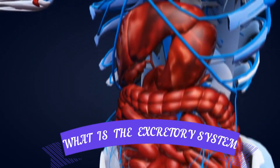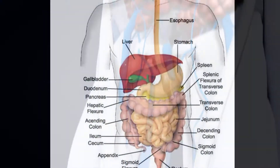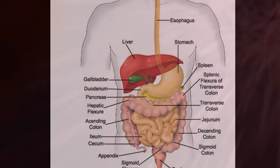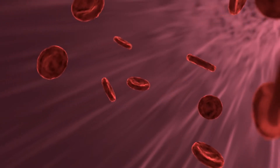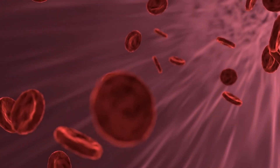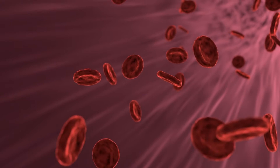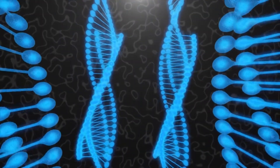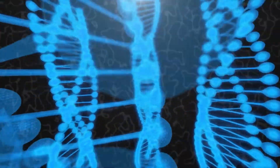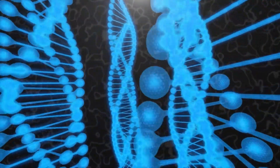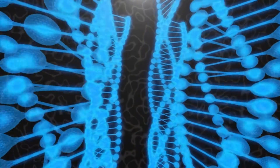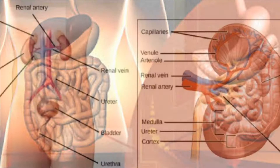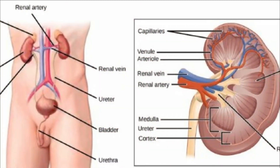What is the excretory system? During different metabolic activities taking place in our body, the body produces many substances of which some are useful while the others are useless and not required by the body. If retained in the body, the useless unwanted substances may become poisonous and cause much harm and in severe cases even death. The organs which remove these unwanted and toxic substances from the body are called excretory organs.